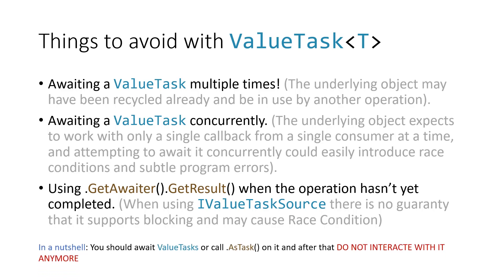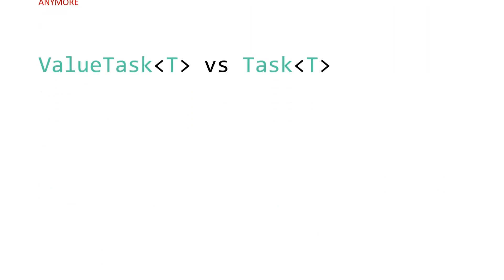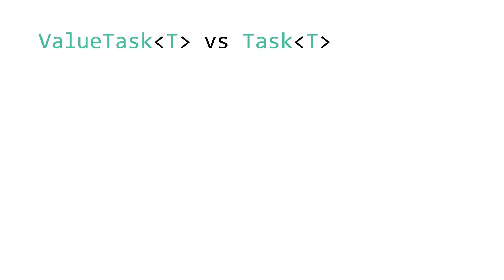In a nutshell, you should always await a ValueTask or call AsTask() to get a Task, and after that you should not interact with that ValueTask anymore. Now let's compare them — ValueTask or Task?